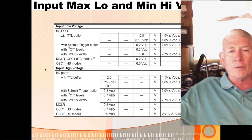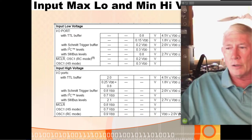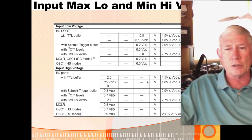There's a register that selects whether we use TTL or Schmitt trigger input levels on our pins. Depending on our VDD, this determines when we call an input a low or a high. This is from the datasheet — you can reference it if you're interfacing to something that might not reach your operating voltage and you want to know if it'll be read correctly.